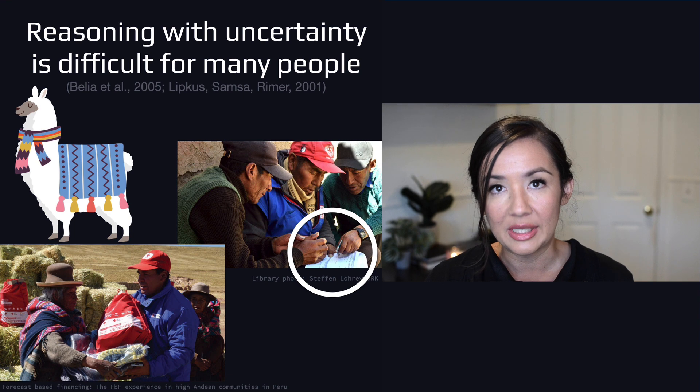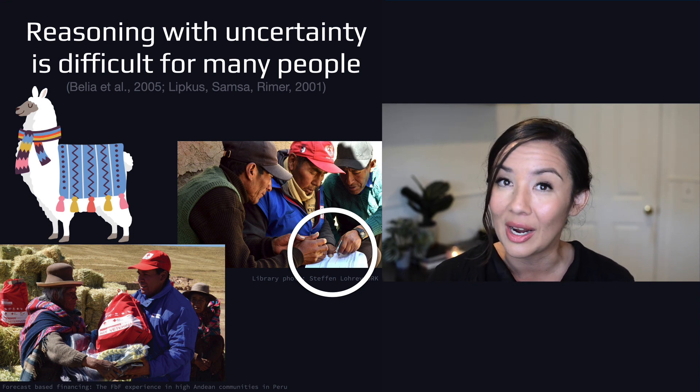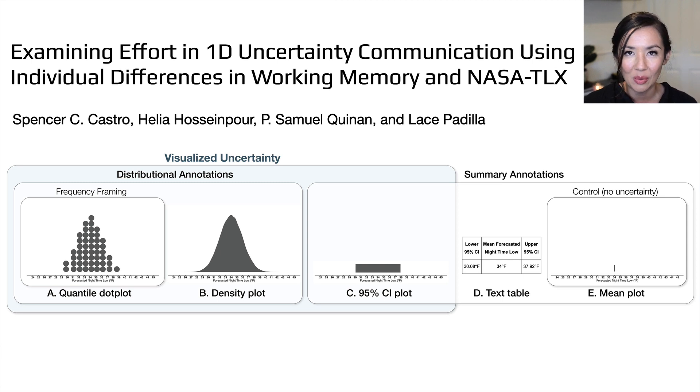Reasoning with uncertainty is very difficult for the general public, but also for experts. And that brings us to our research question. We wanted to know if any of these visualizations require more or less effort, and that can help us give recommendations about how to convey this information, both for meteorologists and for the average person to understand effectively.